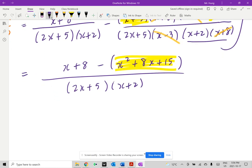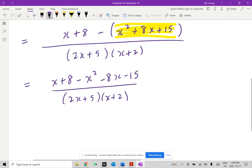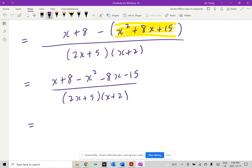But here comes the next step. I copy the common denominator, which is 2x plus 5 times x plus 2. If I look at the numerator, that's going to be x plus 8 minus x squared minus 8x minus 15. Now, if I collect like terms, that's going to be negative x squared minus 7x minus 7 divided by 2x plus 5 in brackets and x plus 2.